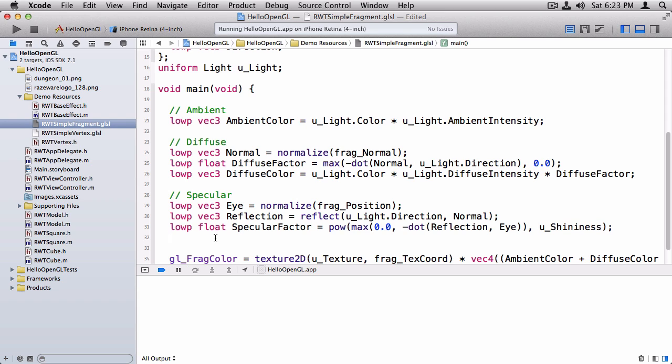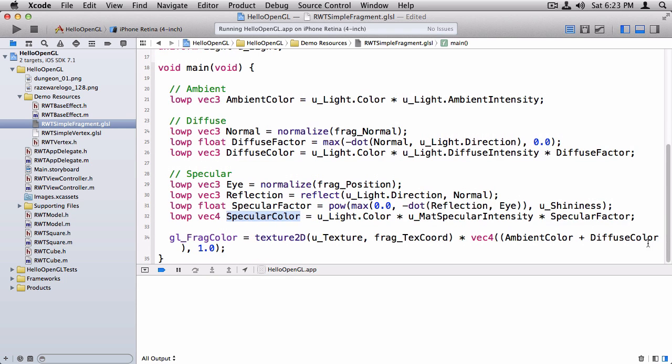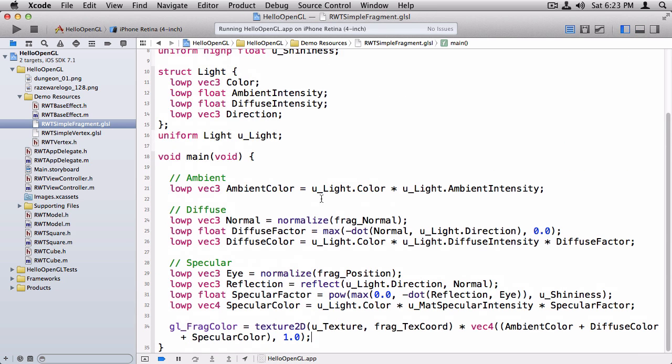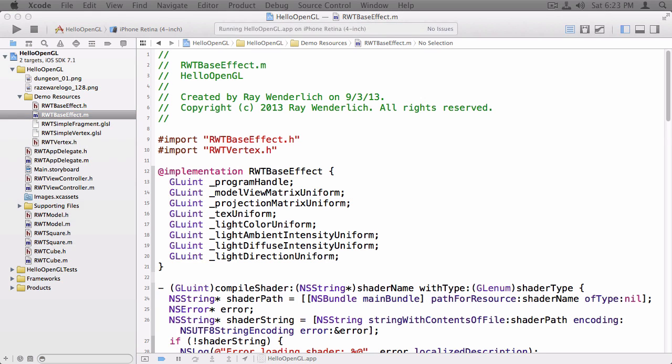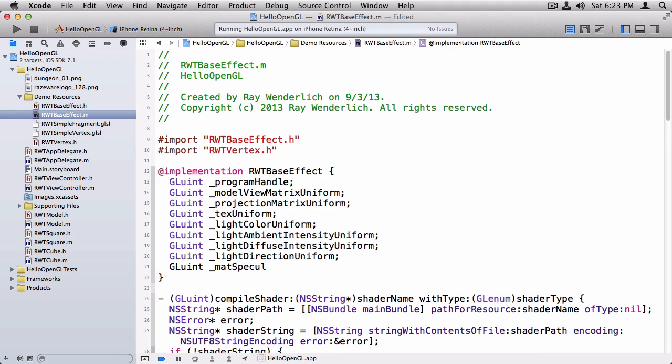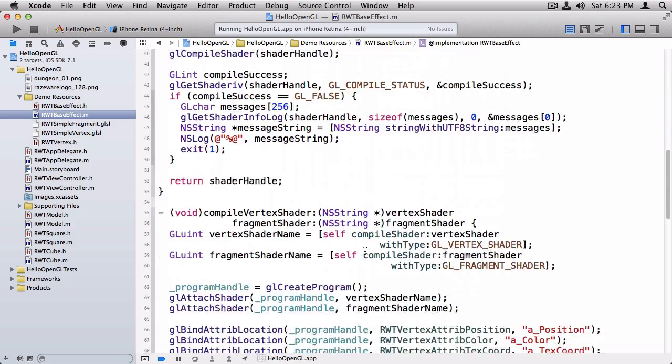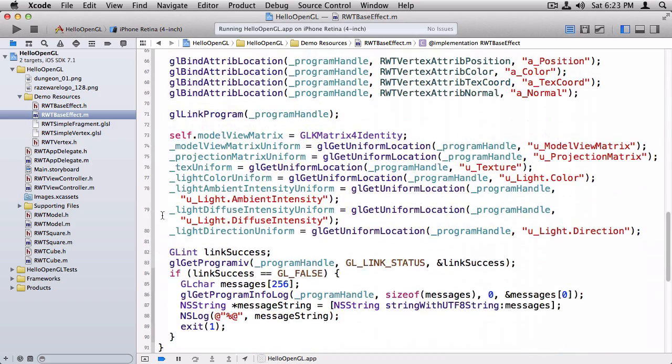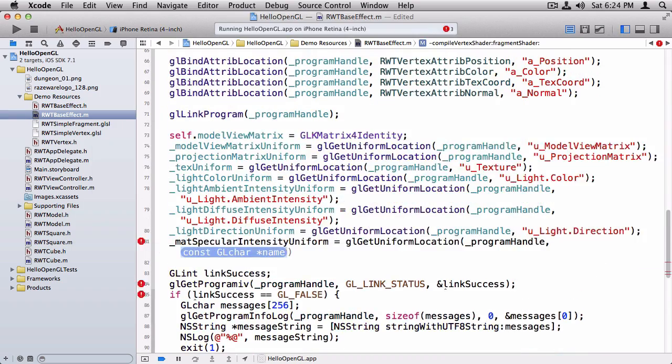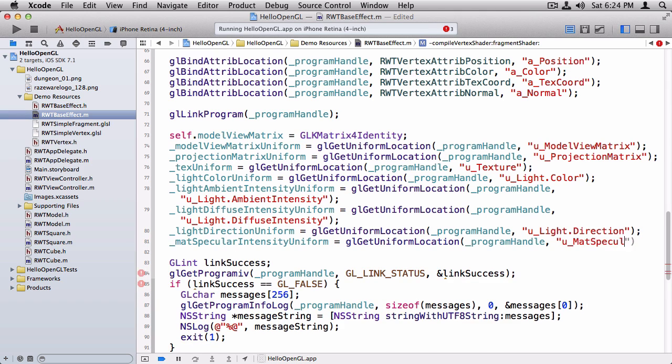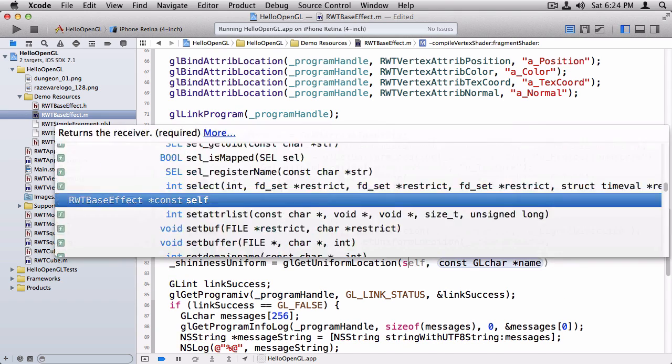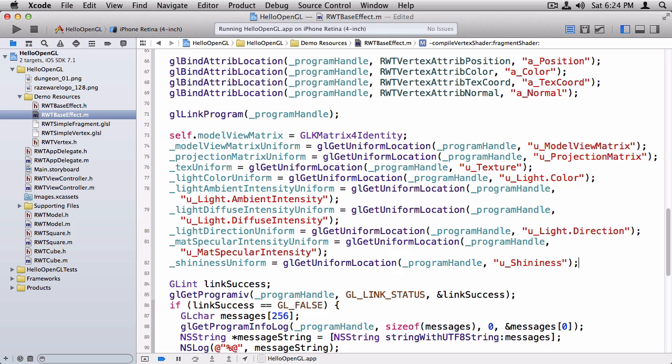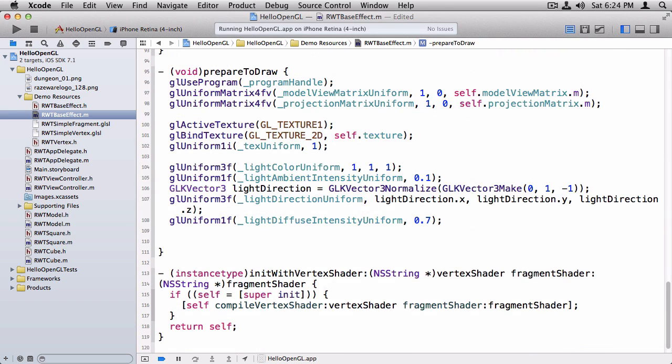Finally, the specular color will be similar as before. And then we'll just add in the specular color to the end of this list. Okay, great. Now we'll move back to our RWT base effect and we'll add in support for those new uniforms. And we have to add those to the end of our list here. And finally, we'll just set these to some initial values.